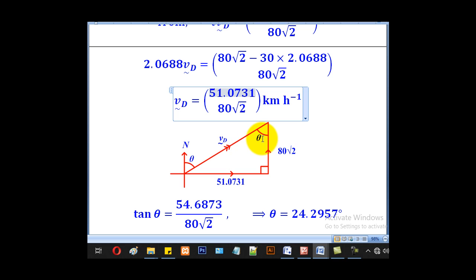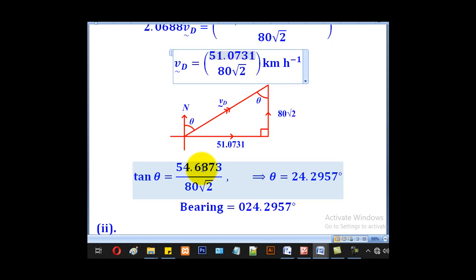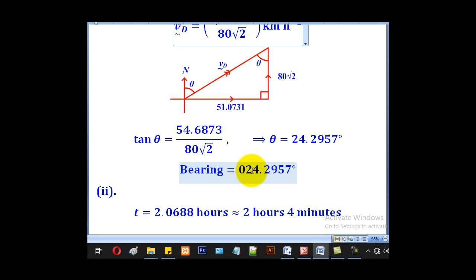We need the direction. This angle corresponds to the alternating angle. Opposite is 54.6873, adjacent is 80√2. So tan θ = 54.6873/(80√2), and we get θ = 24.2957°. Therefore, the bearing will be 024.2957°.